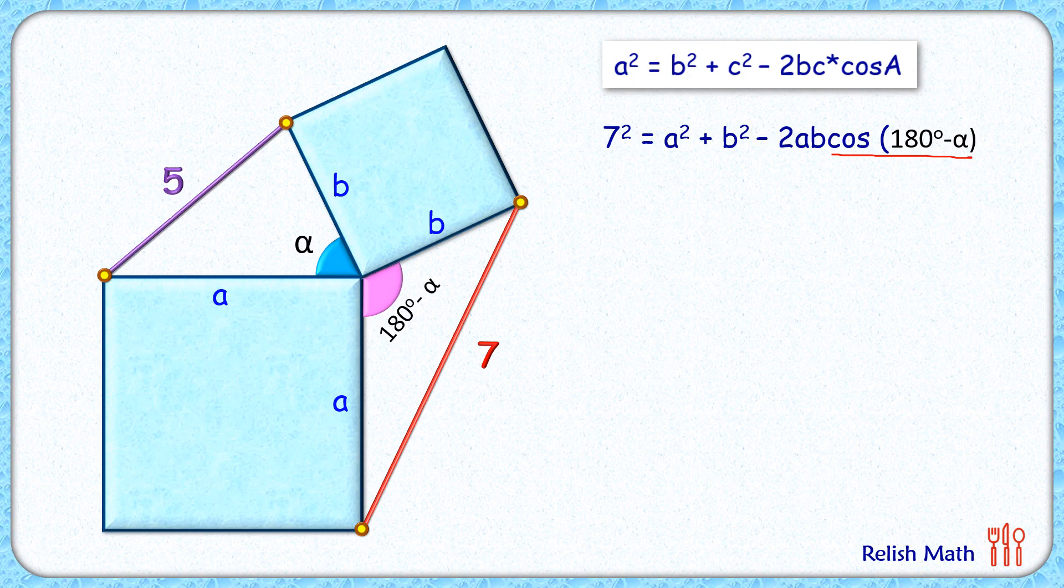The new equation will be 7² = a² + b² + 2ab cos α. Now applying the same cosine law in this second triangle with side lengths 5, b, and a,